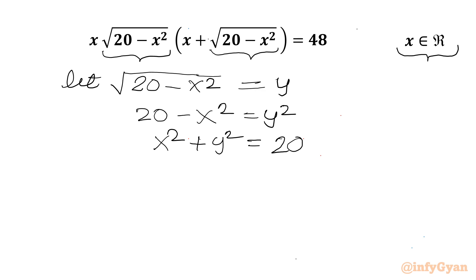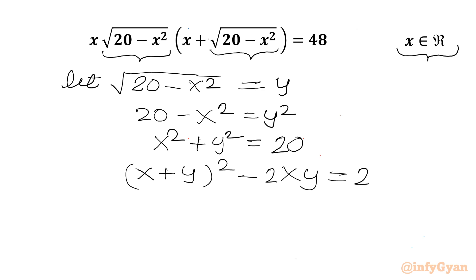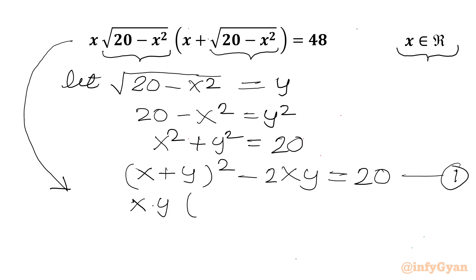Now we can use algebraic identities. So I can write this as (x plus y) whole squared minus 2xy equal to 20. Let me call this equation number 1. After the substitution, our original equation becomes x times y times (x plus y) equal to 48.